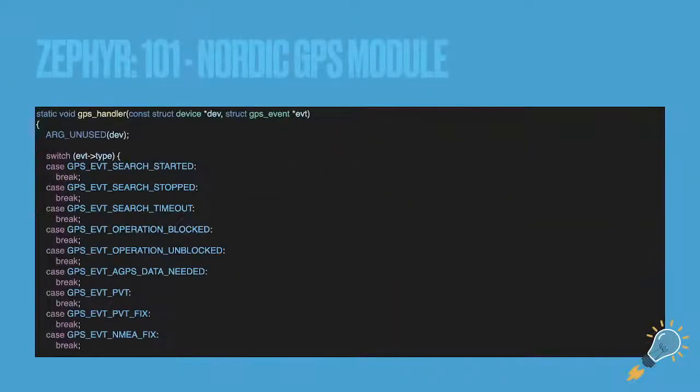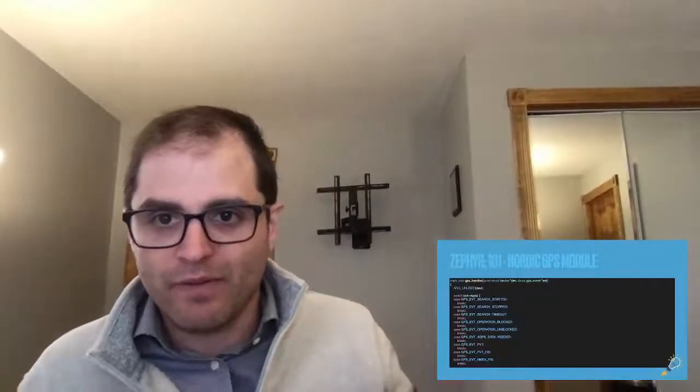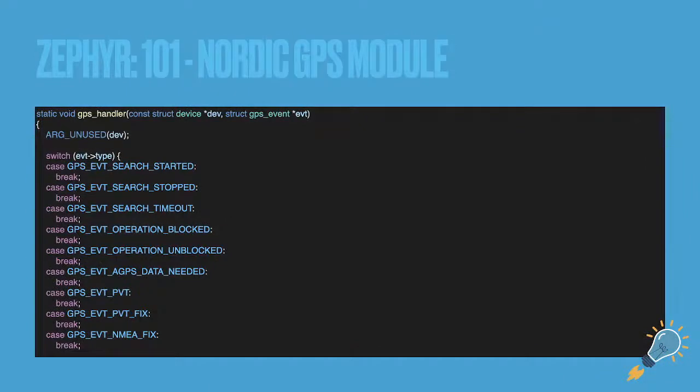So it's very, that's the place where you're going to get the GPS fixed data, or you're going to get information about if it started or stopped or anything like that. But you can see this whole GPS handler. And this is me stripping everything out, but you can imagine that this can get pretty hairy pretty fast. The ones that were probably most important that I've always been interested in is the started, stopped, timeout, and PVT fix. Those are probably the most important ones.